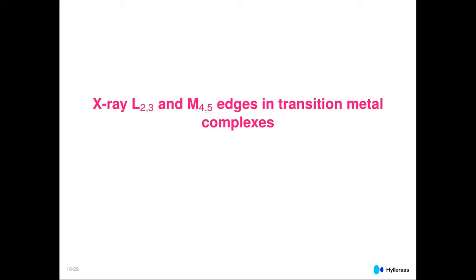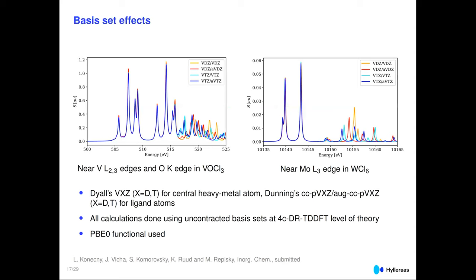Now to the main bulk of the talk: L2,3 and M4,5 edges. This means looking at excitations out of the 2P orbitals (L edges) or D orbitals (M edges) of transition metal complexes. Before showing results, I want to emphasize that we've done extensive benchmarking. What is commonly done is to shift the absorption edge to match the experimental onset, because DFT functionals have errors from self-interaction and incomplete relativistic treatment. Using full four-component relativistic theory, that kind of shift is no longer necessary.